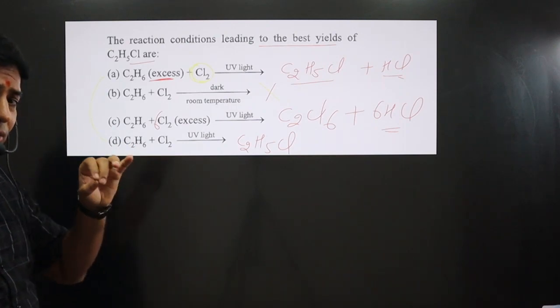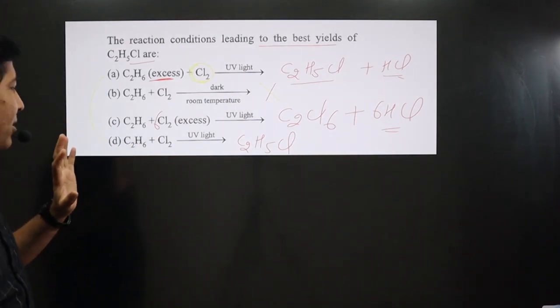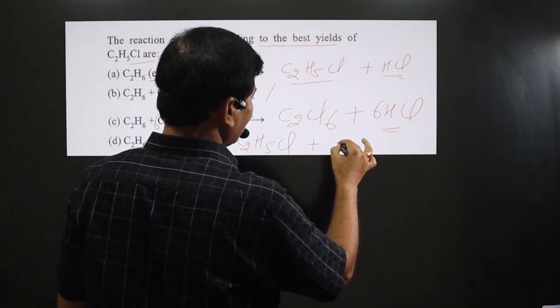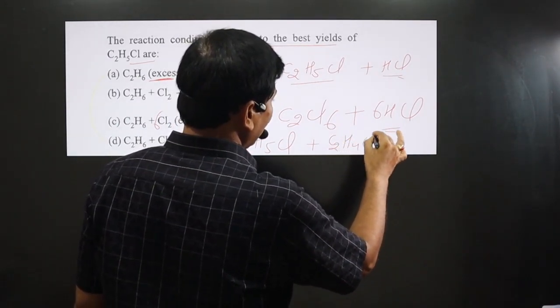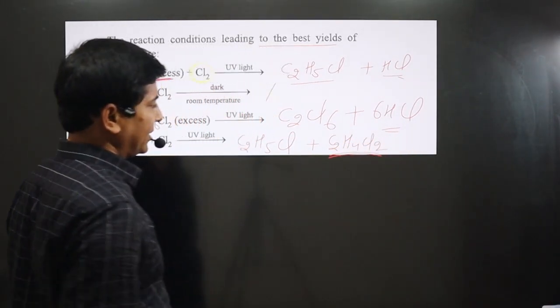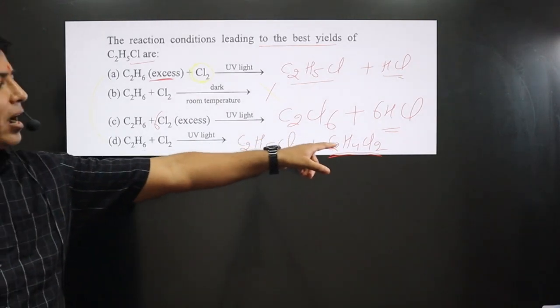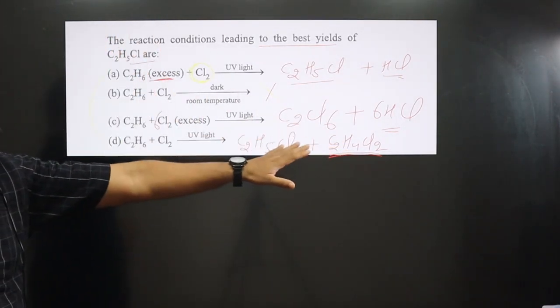Now since the reaction is taking place smoothly, in this case some quantity, very small quantity of di-halide is also formed. We have C2H4Cl2. This is di-halide. This is mono-halide, and this is di-halide.